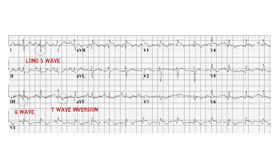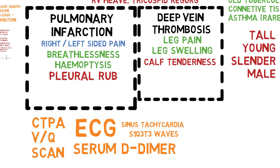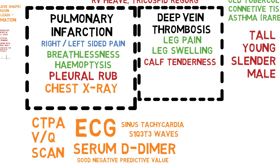Serum D-dimer is not diagnostic for embolism because it is an inflammatory marker and can also be raised in other cases involving inflammation or infection. However, serum D-dimer has a good negative predictive value — if it is not raised, it is very unlikely the patient has pulmonary embolism or deep vein thrombosis. Chest X-ray is also useful to look for the consequence of pulmonary embolism: pulmonary infarction, seen as wedge-shaped infarction known as the Hampton's hump sign. Occlusive pulmonary embolism will also cause regional oligaemia — reduced vascular markings distal to the site of occlusion — known as Westermark sign.